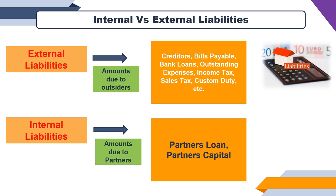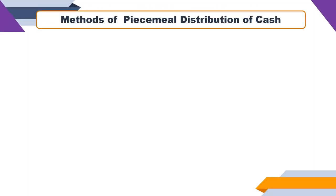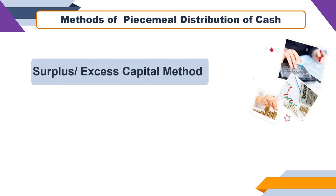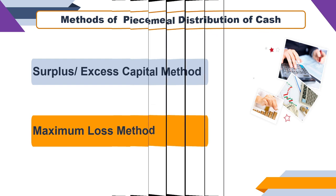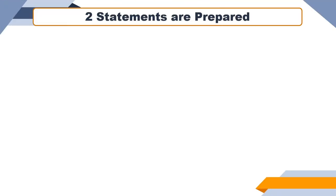There are different methods of piecemeal distribution. The first method is the Surplus or Excess Capital Method, which is very important because it is related to practical questions. The second method is the Maximum Loss Method, which is not in your syllabus. So for SYBCOM Semester 3, we are going to learn only the Excess Capital Method.